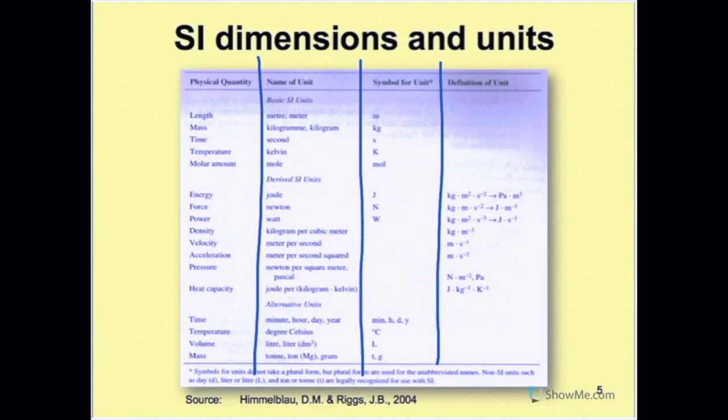For mass, it's the kilogram. You see the two different types of spelling: the first is the British spelling, while the second is the American spelling. The symbol for this unit is kg. Time is second, small letter s. Temperature is Kelvin, capital letter K. Molar amount is mole, M-O-L-E, and the symbol for it is M-O-L without the E.